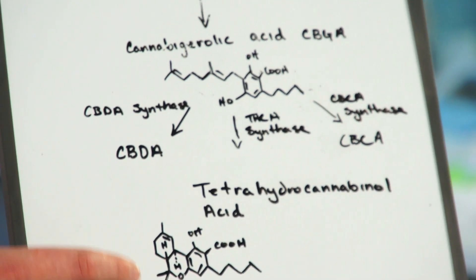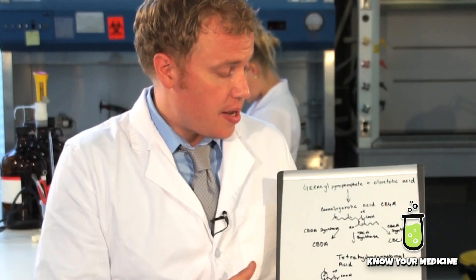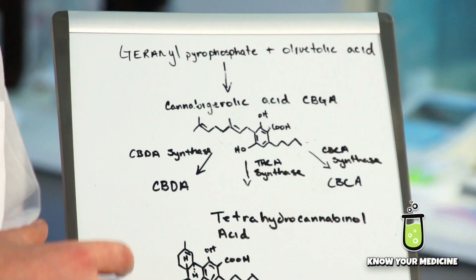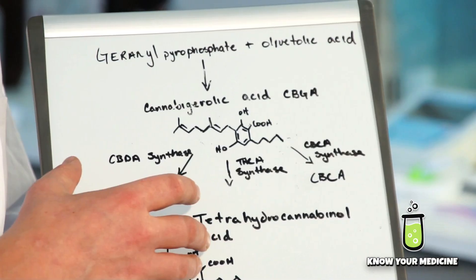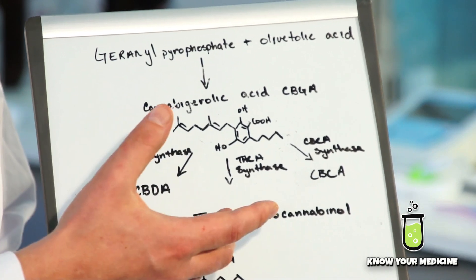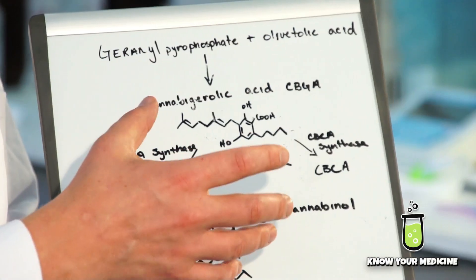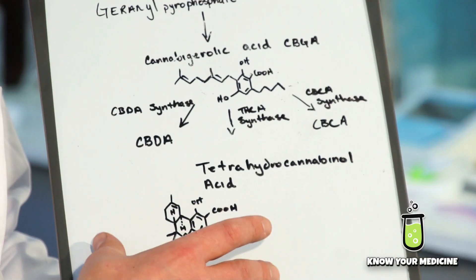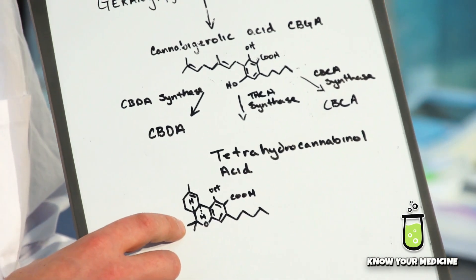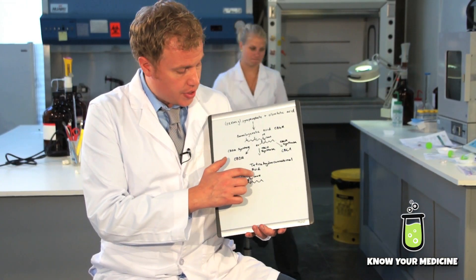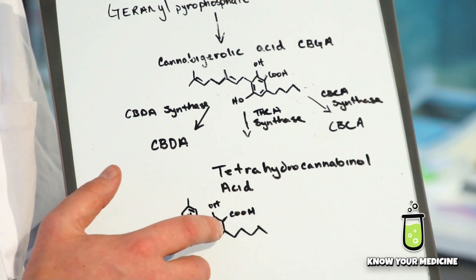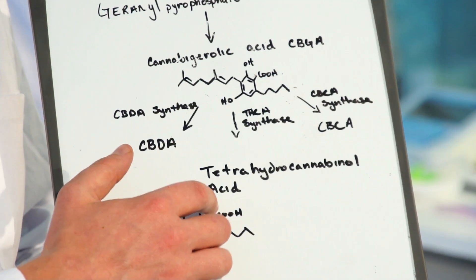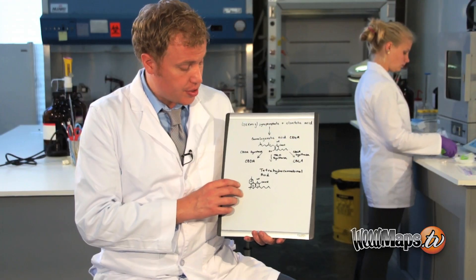Here we have a drawing of the synthetic pathway that THCA takes. We start with geranyl pyrophosphate and olivetolic acid, which combine to form cannabigerolic acid — another acidic cannabinoid. The CBGA basically folds in upon itself, forming rings using the THCA synthase enzyme to produce THCA. THCA is very similar to THC; the only difference is the carboxylic acid group attached to it. When heat occurs, or over time, that carboxylic acid is released as CO2, leaving us with THC.